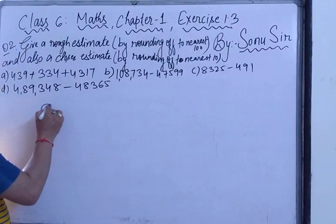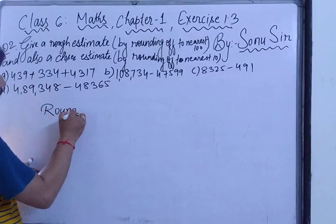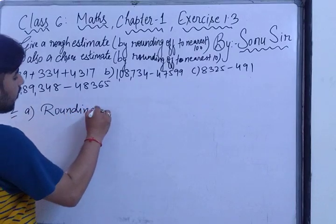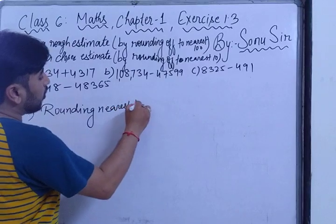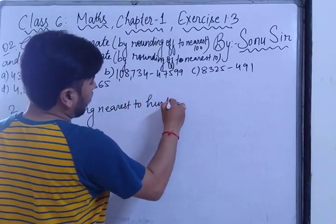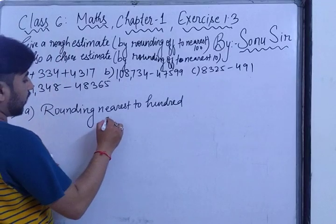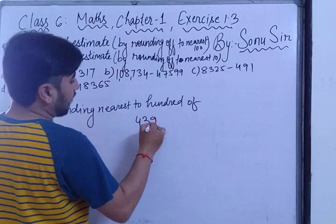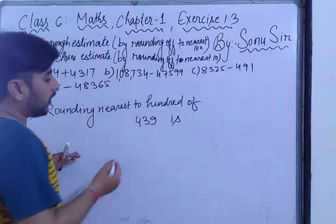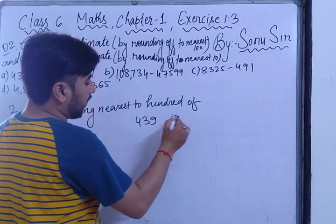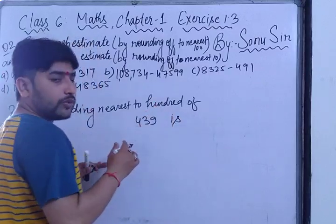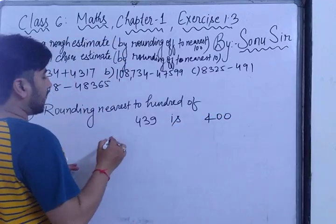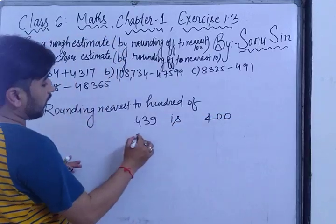First you have to write rounding nearest to hundred, and second rounding nearest to tens. So what will be the rounding nearest to hundred of 439? It is 400, because 439 is not greater than 450, so that's why it is 400.